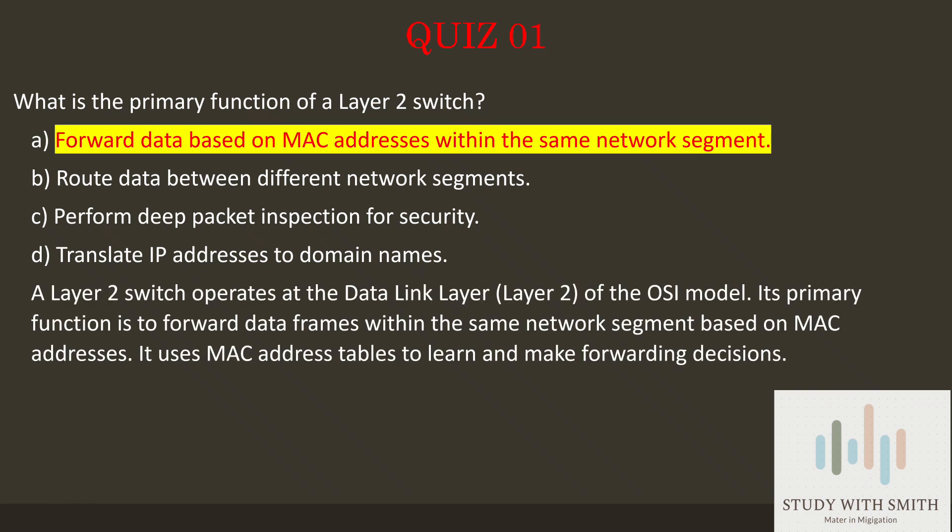The answer is: forward data based on MAC addresses within the same network segment. A Layer 2 switch operates at the data link layer, Layer 2, of the OSI model. Its primary function is to forward data frames within the same network segment based on MAC addresses. It uses MAC address tables to learn and make forwarding decisions.